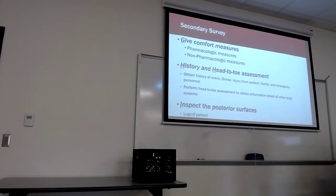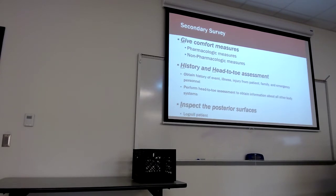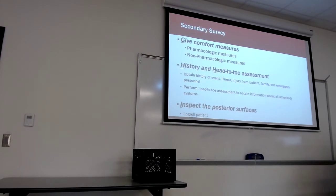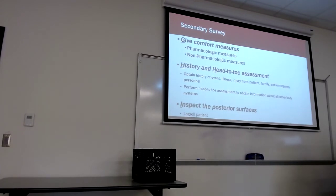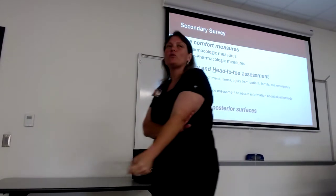Sickle cell crisis — nothing fun about it. These patients live with it most of their lives, often affecting joints: knees, hips, elbows, shoulders, many with joint replacements. They have a high narcotic tolerance and require more narcotics than most patients. But what else can we use? Oxygen, fluids, and warmth. We warm them up, hydrate them, give them oxygen, and cut down on sickle cell pain.